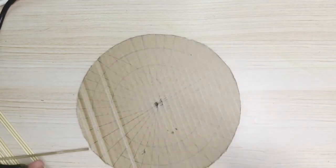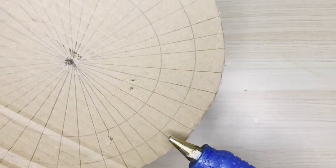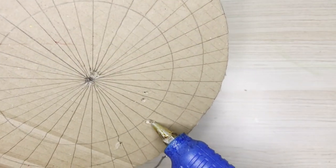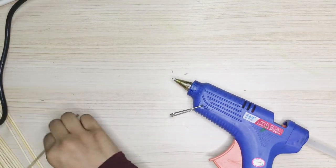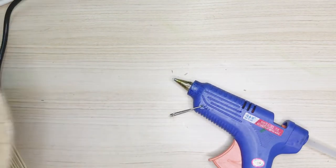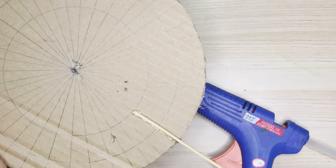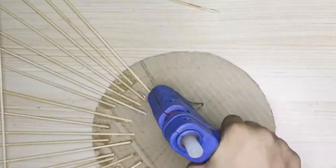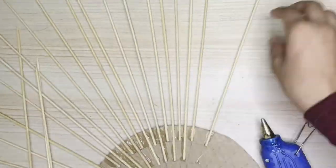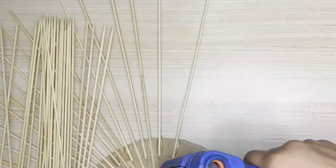I am sticking the skewers with hot glue gun. You can also use fevicol. I am sticking it in two layers so it looks like a sun.